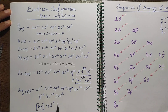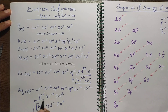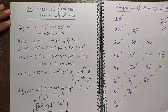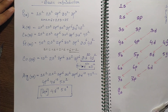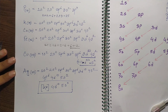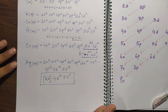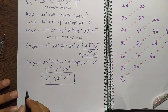Since silver comes after the inert gas krypton (atomic number 36), we can also write its electron configuration in shorthand as [Kr] 4d10 5s1. This is another common way to express the configuration of silver.